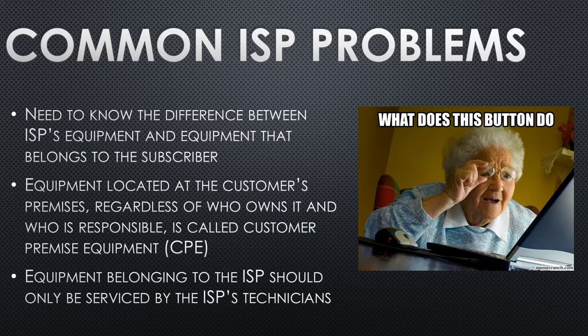Some common problems ISPs face: customer equipment is the scariest thing in support. People don't update it, don't clean it — it's dusty, the cat might have peed in it. Customer equipment sucks. You want to keep customers out of your equipment — the customer-premises equipment (CPE) is their problem. As Verizon or Mediacom, you want to lock up your side and say 'plug into this jack and stay out of our wire box.' It should only be serviced by your technicians.